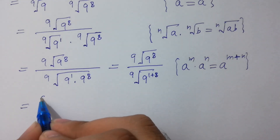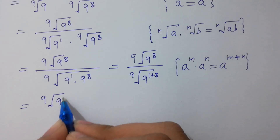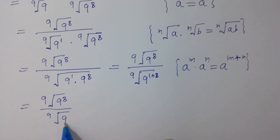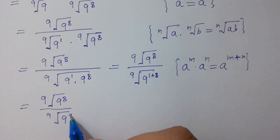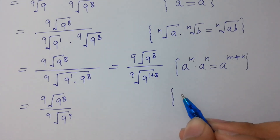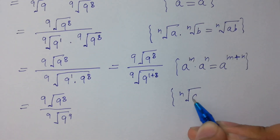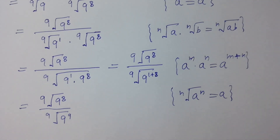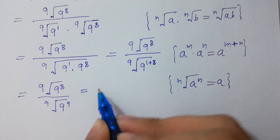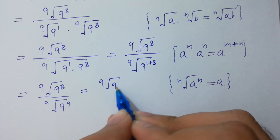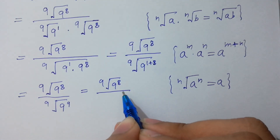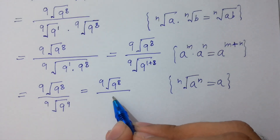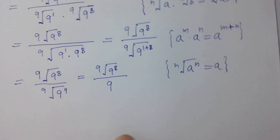So 9th root of 9 to the power 8 over 9th root of 9 to the power 9 equals 9. Since n-th root of a to the power n equals a, so 9th root of 9 to the power 9 equals 9. Got it?